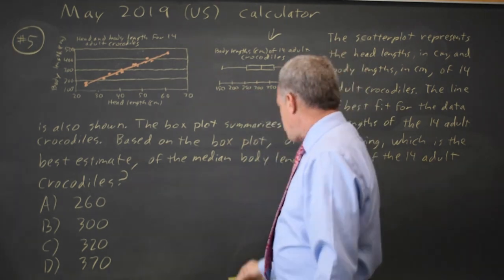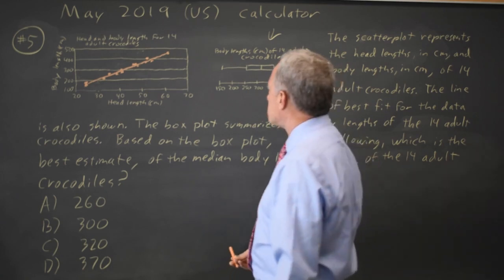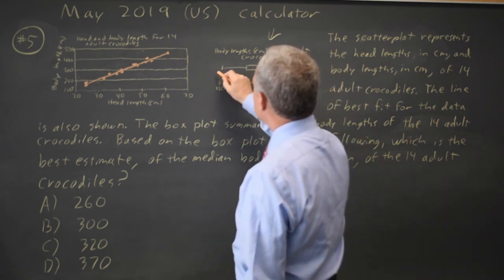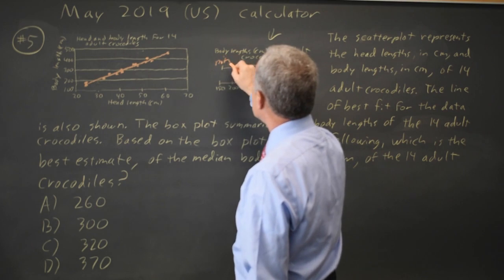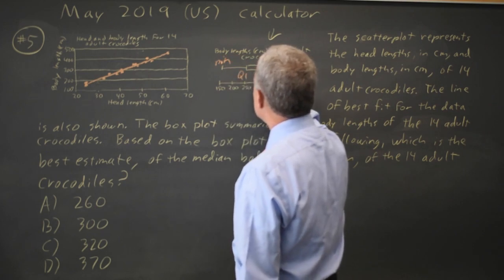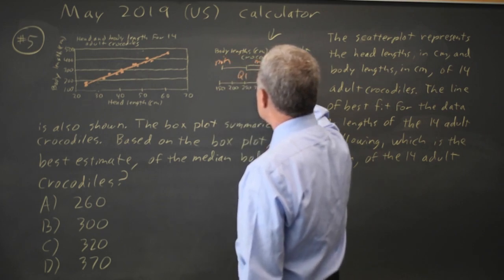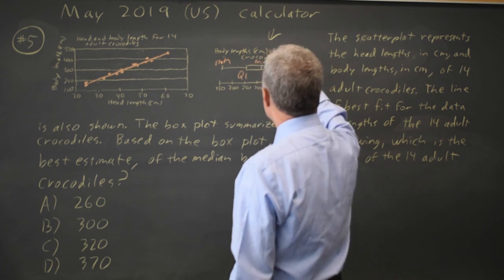The box plot gives us something called a five-number summary with the minimum, quartile one, the median, quartile three, and the maximum.